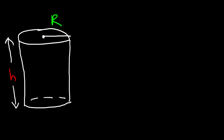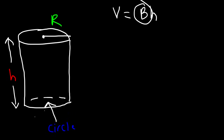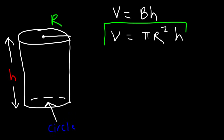The volume of a cylinder is basically the volume of the base times the height. Notice that the base of a cylinder is a circle, and b represents the area of the base. The area of a circle is pi r squared, so the volume of a cylinder is pi r squared times the height — it's the area of the base times the height.